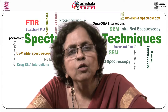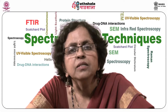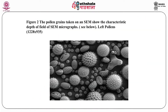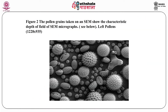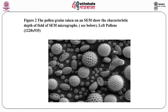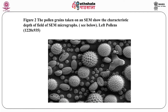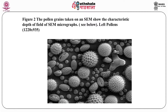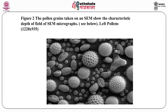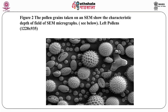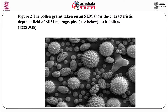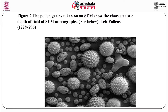Here is one more example to appreciate that we are only looking at surface morphology. You have seen the bacteria in the previous picture; now you can see pollen grains, which have different structures. This shows the characteristic depth of field of the SEM micrograph.